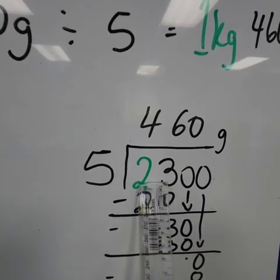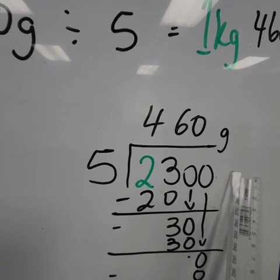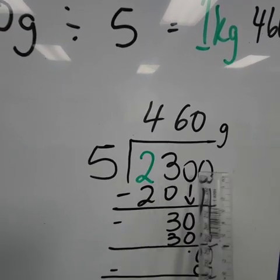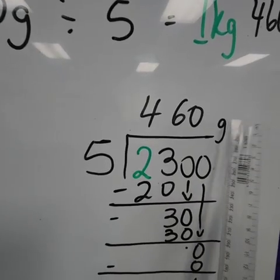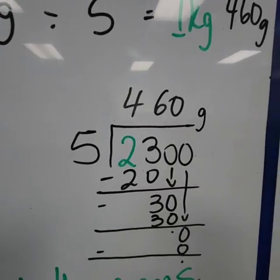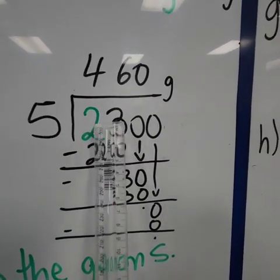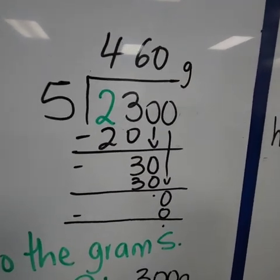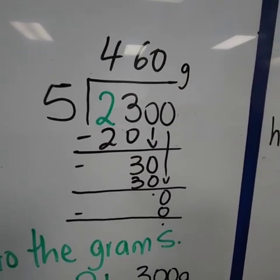We'll say 2,000 plus 300, which will give us our total of 2,300 grams. That's how we regroup. We've regrouped the 2. Then we begin again with our division as always.